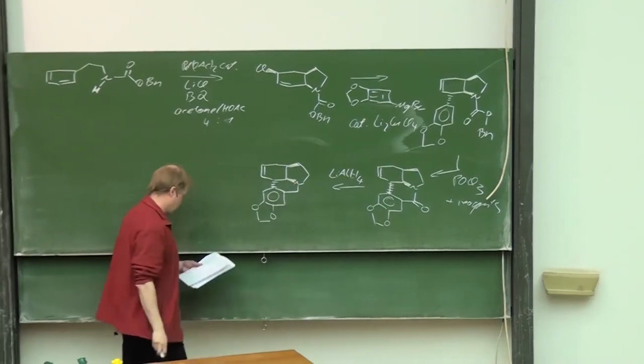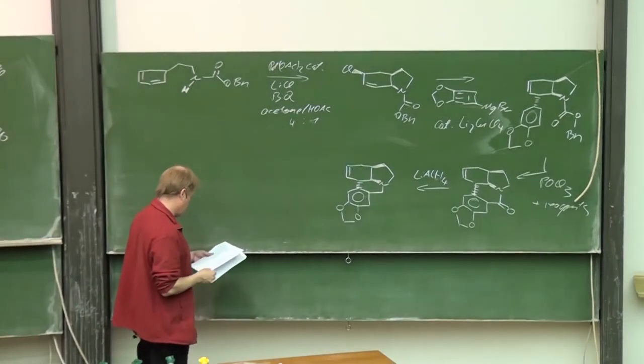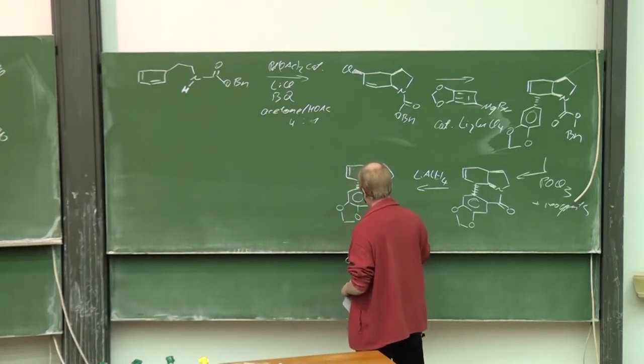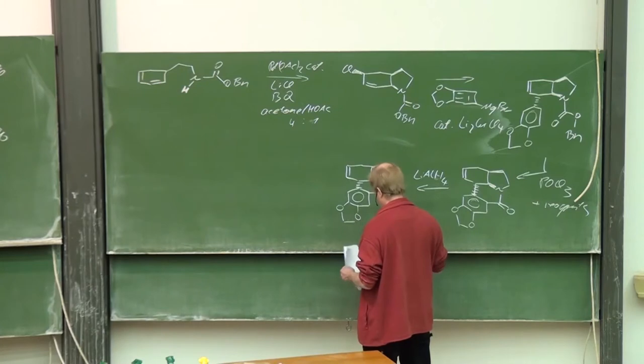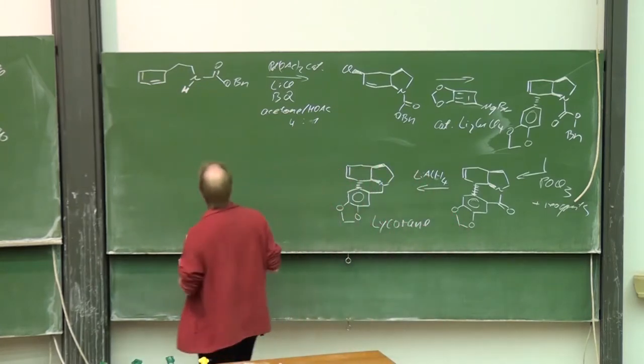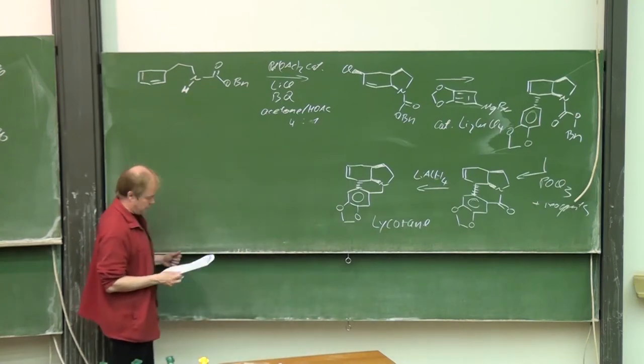And last step to finish the alkaloid synthesis is to reduce the cyclic amide with lithium aluminum hydride. And certainly you know with lithium aluminum hydride it's completely reduced until we have a CH2 group here. So this was the final product of the synthesis and this natural product is called lycorane.